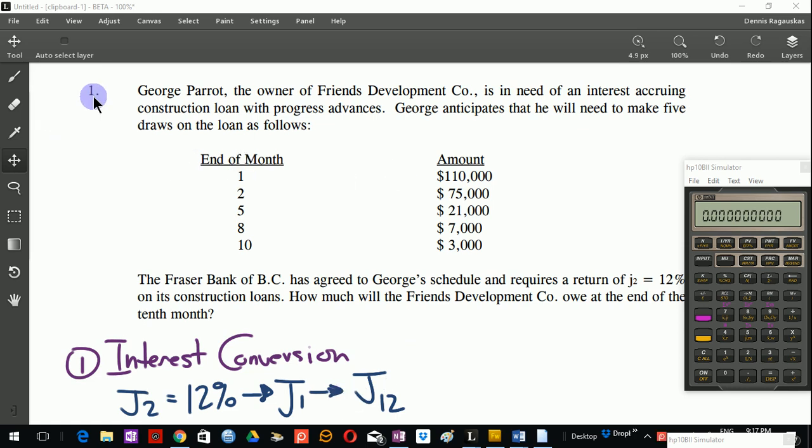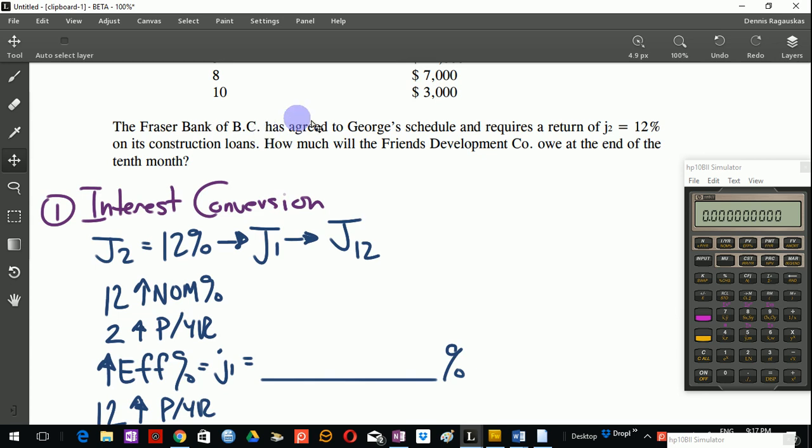George Parrott, the owner of Friends Development Co., is in need of an interest accruing construction loan with progress advances. George anticipates that he will need to make five draws on the loan as follows. End of month one, he'll need 110 thousand. End of month two, 75,000. End of month five, 21,000. End of month eight, 7,000. End of month 10, 3,000. The Fraser Bank of BC has agreed to George's schedule and requires a return of J2 equals 12% on its construction loans. How much will the Friends Development Co. owe at the end of the 10th month?